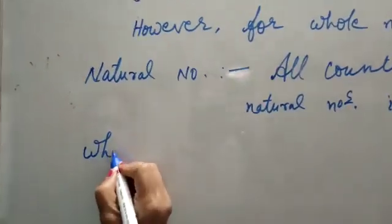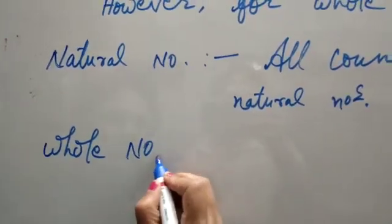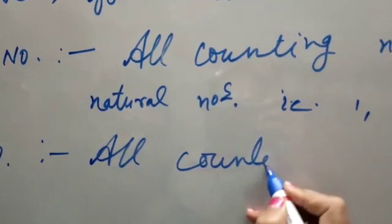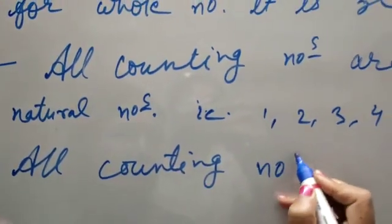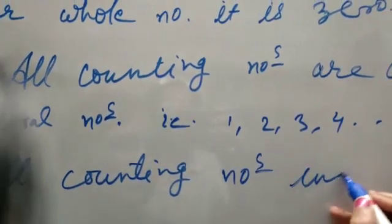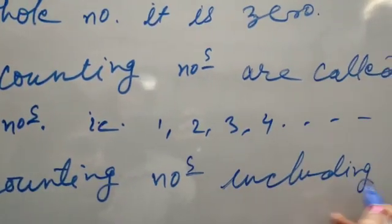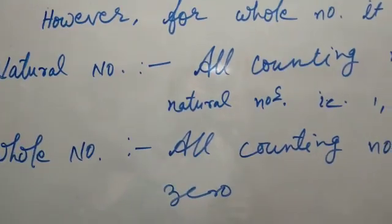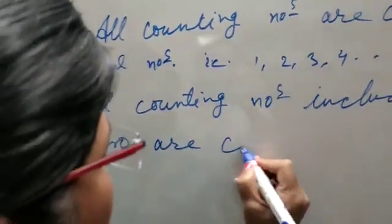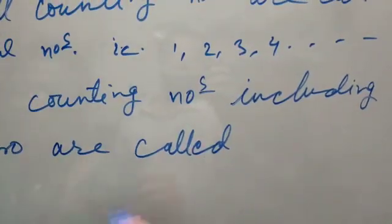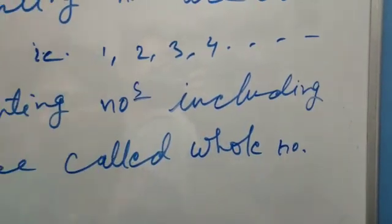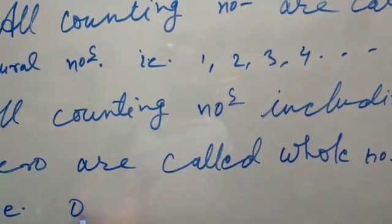Whole number: all counting numbers including zero are called whole numbers. That is zero, one, two, three, four and so on.